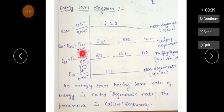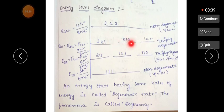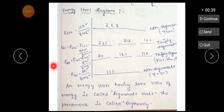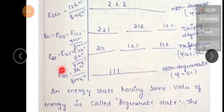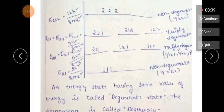Next, consider the state (2,2,1). This has 3 possibilities: (2,2,1), (2,1,2), and (1,2,2). For each, nx² + ny² + nz² = 4 + 4 + 1 = 9. The energy value is 9h²/8mL² for all three. Therefore, this is also a triplet degeneracy state.